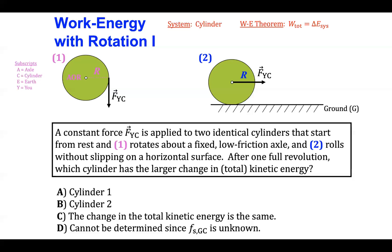Using the subscripts A, C, E, and Y, we can identify the forces that act on that system. There's the force that you apply to the cylinder on the outside edge — it's going to cause it to rotate about the axis of rotation. There's the weight force down and the force that the axis of rotation exerts upward on the cylinder. In this particular situation, the only motion the cylinder can experience is rotational motion about the axis of rotation; this cylinder is not going to translate left or right or up or down.